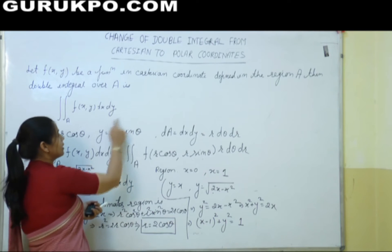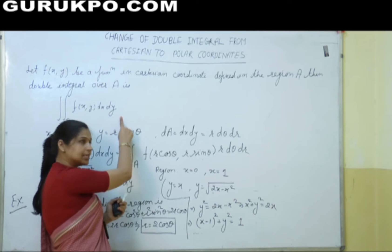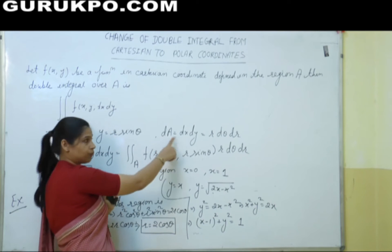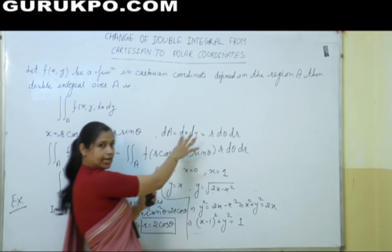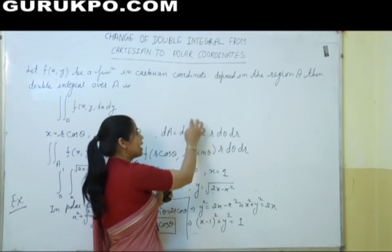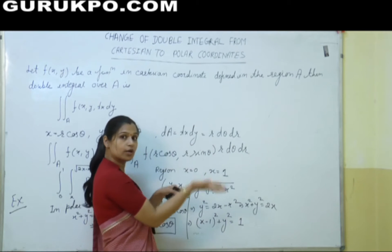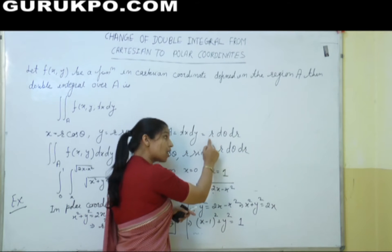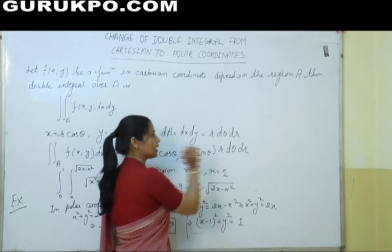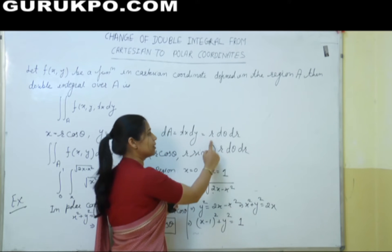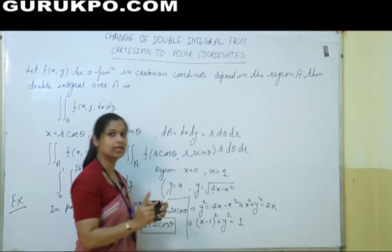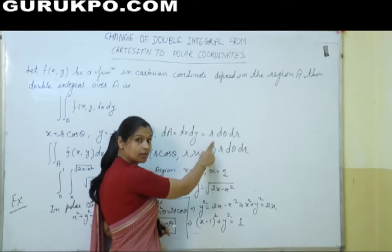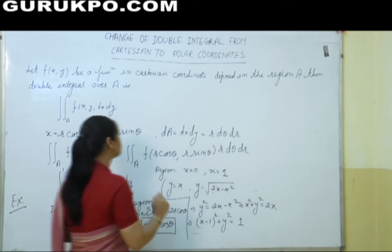And now what about dx dy? dx dy, denoted as dA, in terms of polar coordinates becomes r dθ dr. Remember — not dθ dr alone, but r dθ dr.